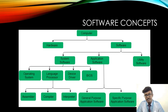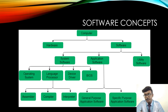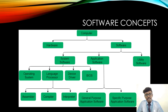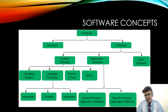We can see these three categories clearly in the diagram: system software, application software, and utility software. System software directly allows the user to interact with the hardware components of the computer system. The best example is the operating system. The operating system is the main program — we call it the resource manager because it manages resources like printers, assigning scheduling and priority, and controlling input and output devices.